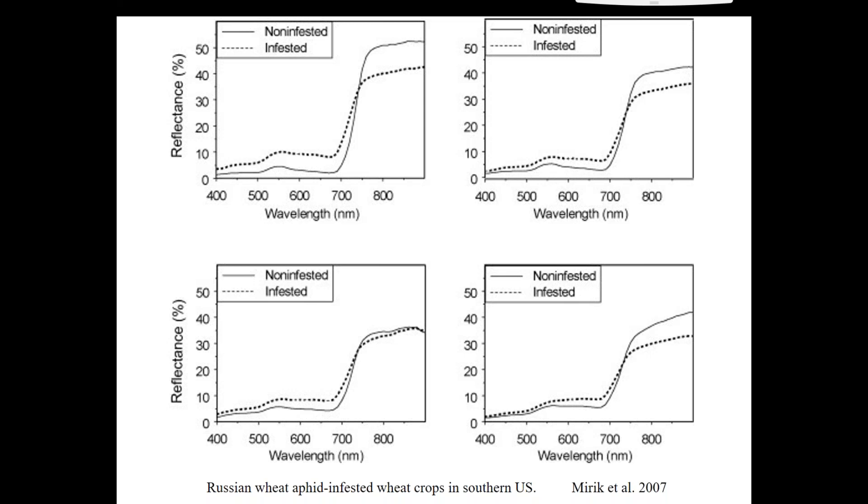And here's another one showing the same stress response, which are Russian wheat aphid-infested crops in the southern U.S. The top two figures are from the same crop at two different times, and the bottom two are different crops. Again, you can see the same sort of trend is happening.